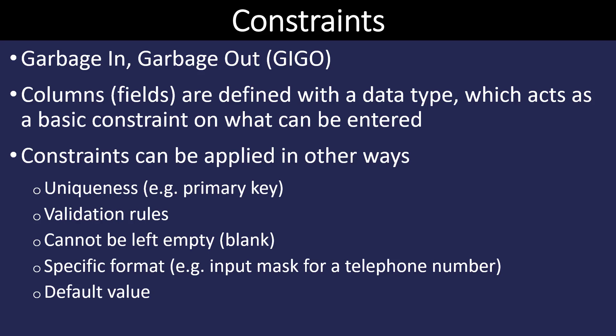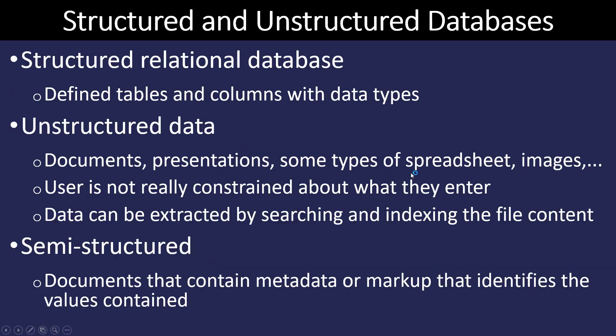We can add validation rules — for example, if we had a field for social security number, we could make sure it has the correct number of digits and even check for hyphens. We can tell a field not to be blank, making it a required field. We can specify a format for inputting data, such as a mask for a telephone number, or we can add a default value. For example, if we had a customer database for Ohio, we could automatically have the state field default to 'OH'.